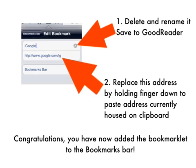First of all, delete its name and call it 'Save to GoodReader' or simply 'GR' — whatever you choose. The really important part though is the second line: you must replace this address. Delete the address that is there, hold your finger down in that field until Paste appears, and then paste the address that's currently housed on the clipboard. You've done it — you've added the bookmark to your Bookmarks Bar.